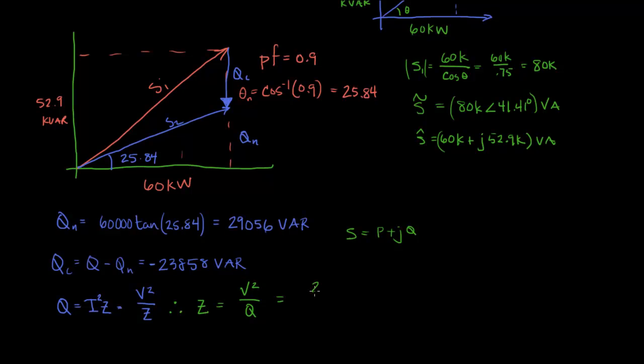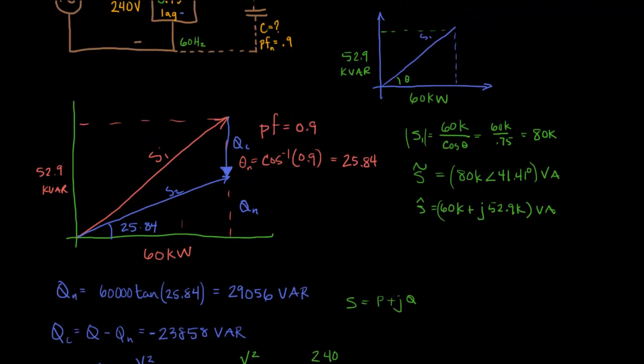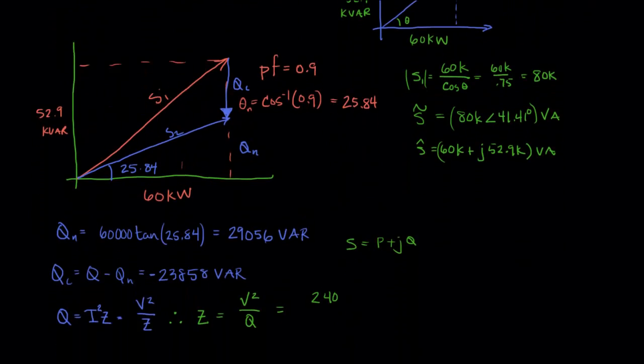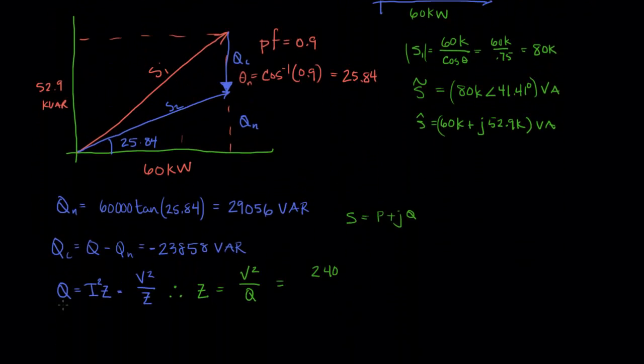So when you do this 240... where am I getting 240 from? Well, the voltage across the capacitor is 240 volts. That's why I chose to use V squared over Z rather than I squared Z. So it's 240 squared over Q, which is minus 23858.